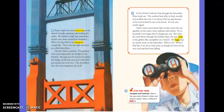At Fort Point I look for Pop through the binoculars Mom lends me. The workers look alike in their overalls and swabby hats, but I can always find my pop because of the red kerchief he ties around his throat — it's our scarlet signal. I don't worry much about him on days when the sun sparkles on the water and the sailboats skim below. But when the wind blows through the Golden Gate, the men cling to the girders like caterpillars on a branch. On foggy days my hands sweat on the binoculars. Where is he? When I find him I try not to look away, as though the force of my eyes can keep him from falling.